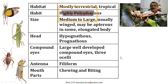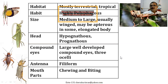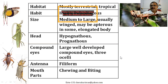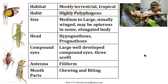The head is always hypognathous and in some it is prognathous. The compound eyes are very well developed and they have three ocelli on the head. The antennae are fully formed. They have chewing and biting mandibulate mouthparts. Because of their well-developed mouthparts they eat food very efficiently, which is the reason they became so problematic.